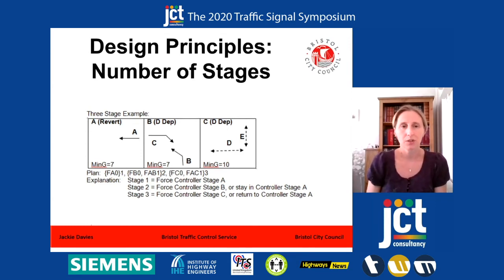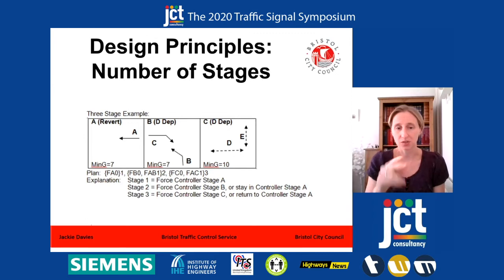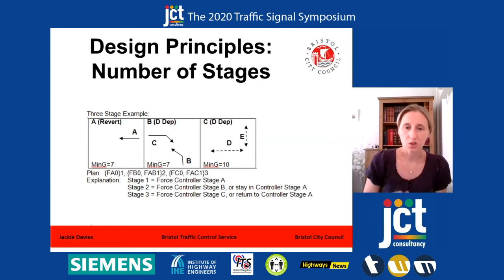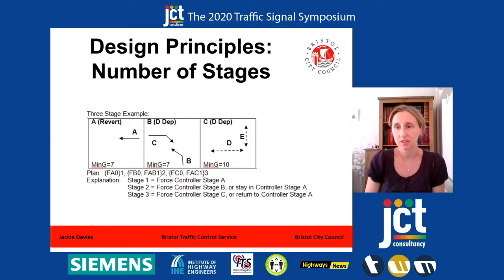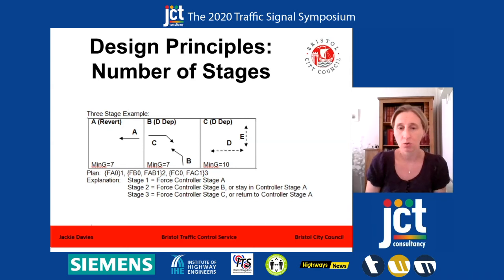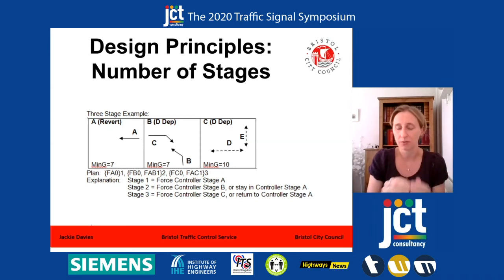Working through an example: in a nice simple case, stage one in SCOOT is the revert stage, so it's going to run every cycle — we say SCOOT stage one, controller stage A, and it will do that every time. In SCOOT stage two, we say run controller stage B, but that's demand-dependent, so we also have to say 'or stay in A' because it might not run B. Same in stage three — run controller stage C, or return to controller stage A. It works because you're always butted up against the stage that's always going to run. That's what I mean about plan lines and making sure that you provide the alternates.